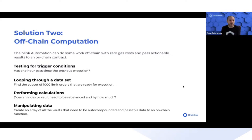Checking which vaults have rewards ready to be harvested and re-deposited would be an expensive proposition to do on-chain. With Chainlink Automation, all of this can be performed off-chain.